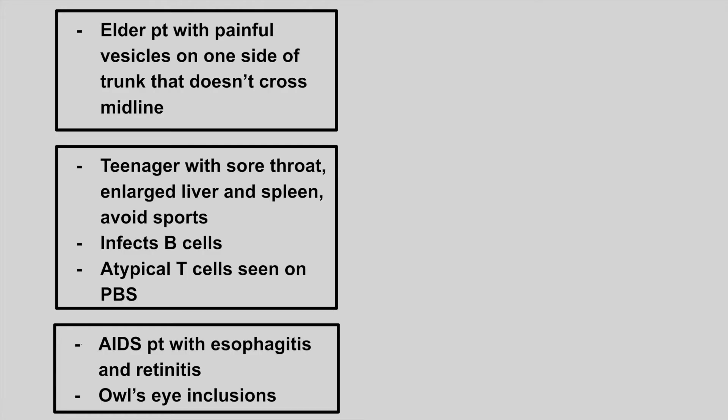The next patient is an elder with painful vesicles on one side of the trunk that doesn't cross the midline. This is zoster, also known as shingles. Look out for something called post-herpetic neuralgia, where the patient is going to get really bad pain in that dermatomal region even after the vesicles go away.